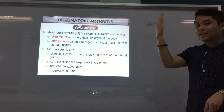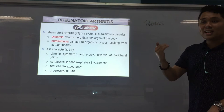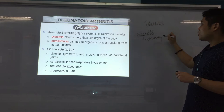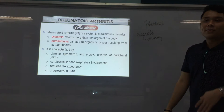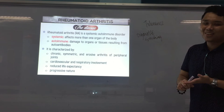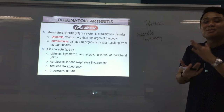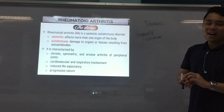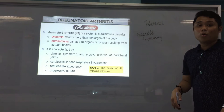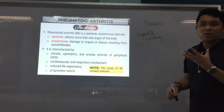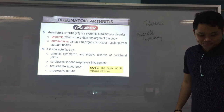The greatest environmental risk factor is cigarette smoking. Cigarette smoking is considered the greatest environmental risk factor for RA. So if you are a woman, older than 65, and you smoke — that's a very high risk of having RA. Still, the cause of RA remains unknown — so it is idiopathic. It could be genetic predisposition and all that, but generally the exact cause is not yet known.